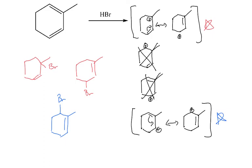When we're not dealing with a symmetric molecule, it's safer to draw out all possible carbocations, figure out which are the most stable, and then predict products based on those.